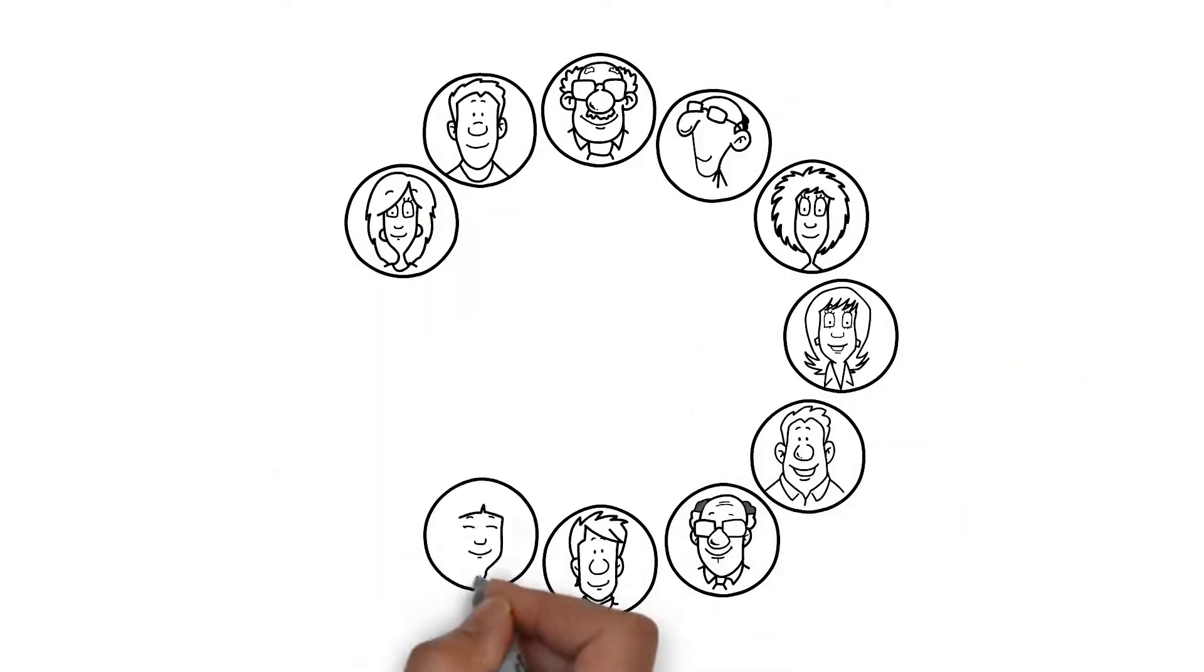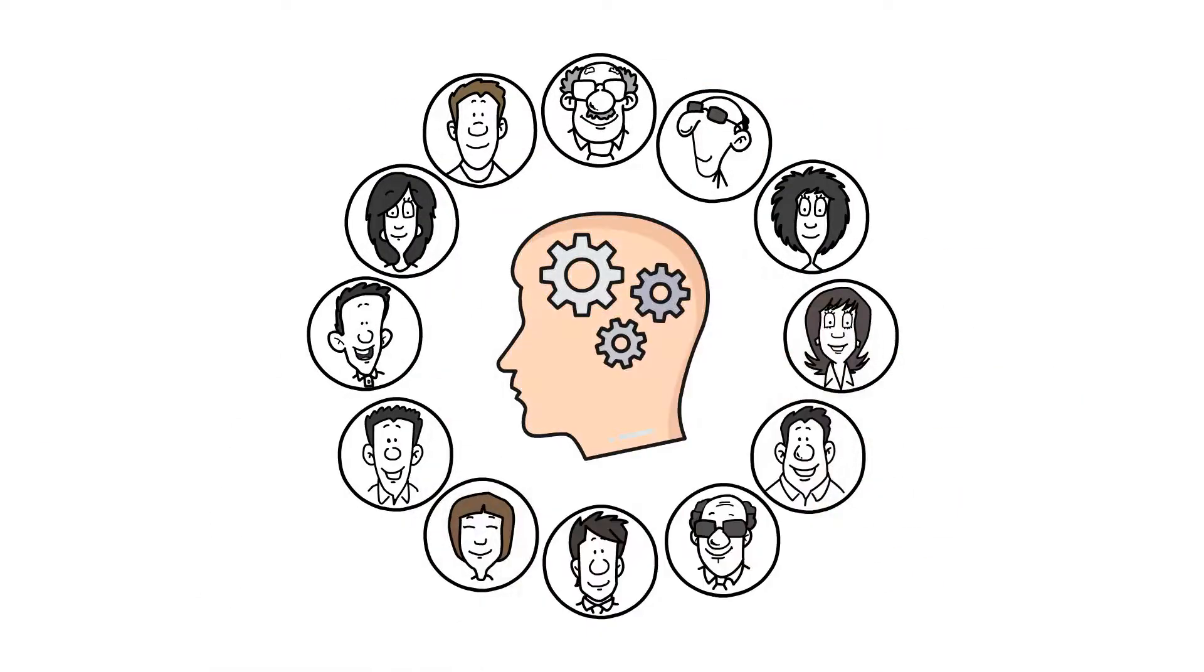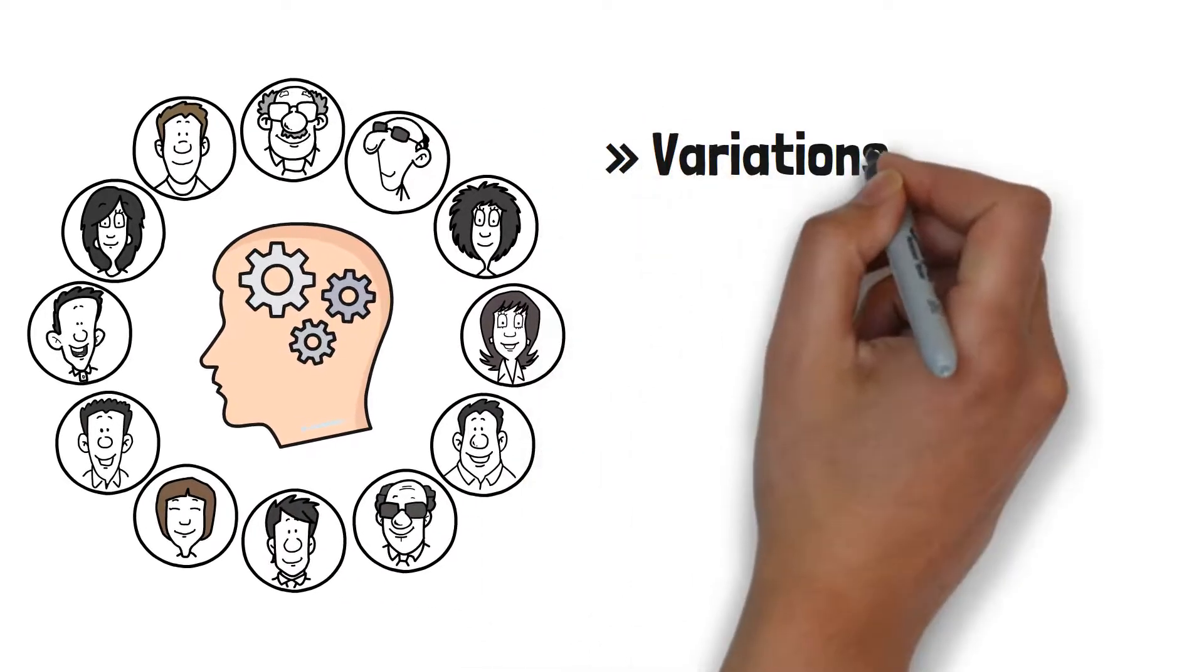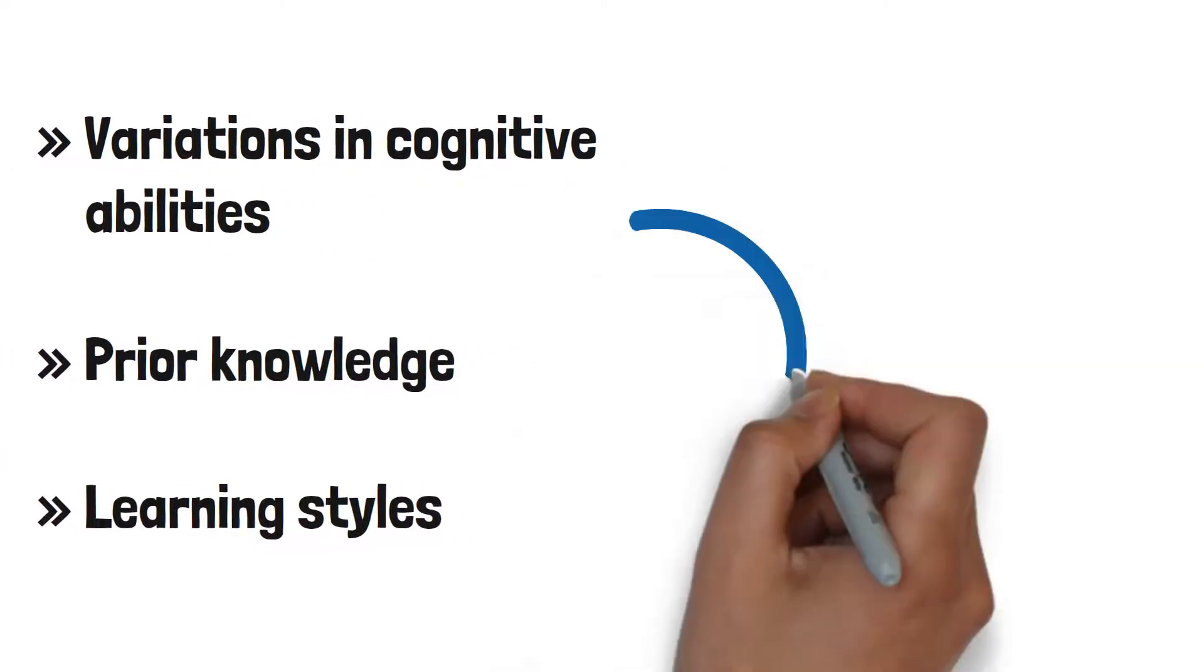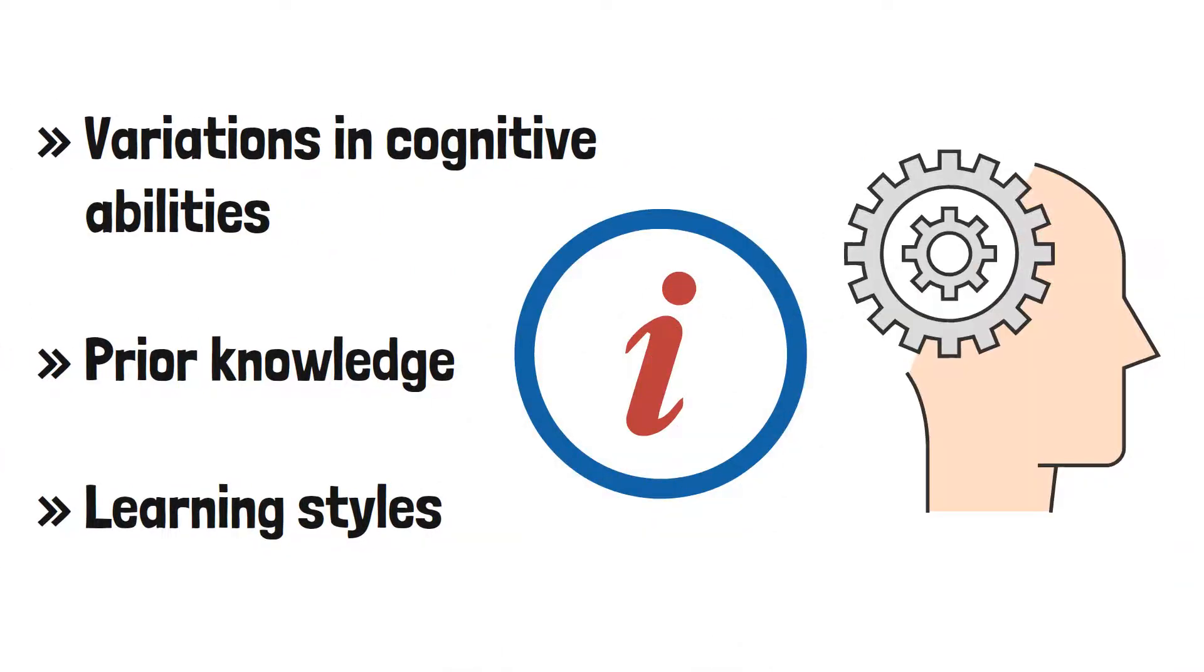Another criticism is that it does not account for the role of individual differences in memory retention, such as variations in cognitive abilities, prior knowledge, and learning styles, which can all influence how information is processed and remembered.